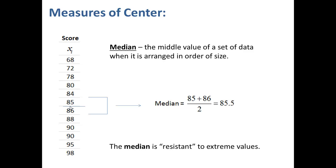We say that the median is resistant to extreme values. If the person who scored the lowest, 68, instead earned a score of 0, that would not affect the median at all because the median is a positional value. So the median is still the average of 85 and 86, or 85.5.